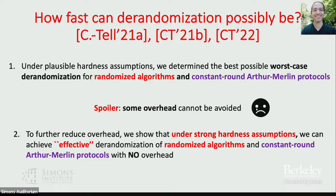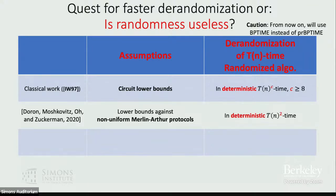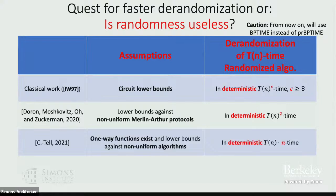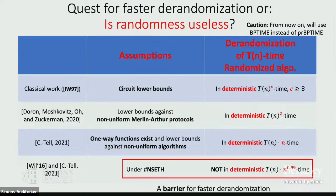To further reduce the overhead, we also show that under very strong hardness assumptions, we can achieve effective de-randomization of randomized algorithms and constant-round Arthur-Merlin protocols with no overhead. More precisely: classical works give de-randomization with a big polynomial overhead. A recent breakthrough by Dora, Moskovitz, and Zuckerman, assuming lower bounds against non-uniform Arthur-Merlin protocols, gives quadratic de-randomization. Our recent work with Roy, assuming a one-way function and lower bounds against non-uniform algorithms, achieves de-randomization with overhead of only n. Surprisingly, following our work, Williams showed that under an assumption called Sharp-NSETH, this overhead of n is actually tight.